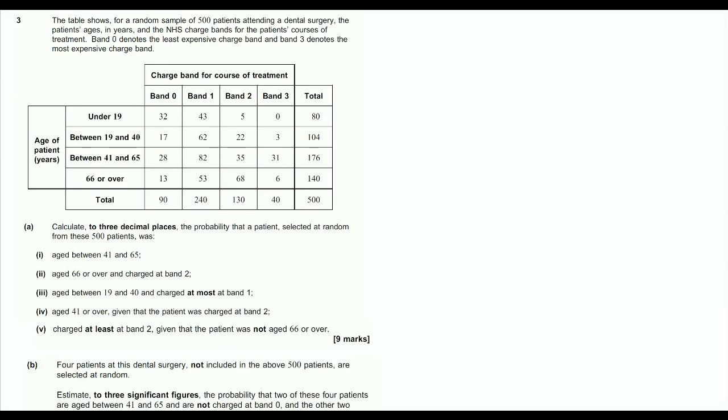Right then, so for question 3, we've got a probability from a table question. Now all the totals have been given for us, so we're going to get straight on with our answers here.